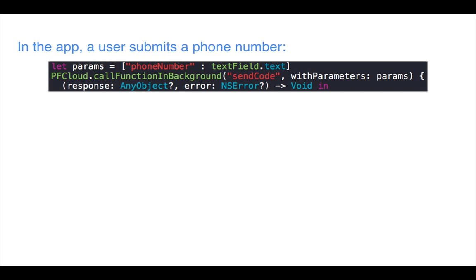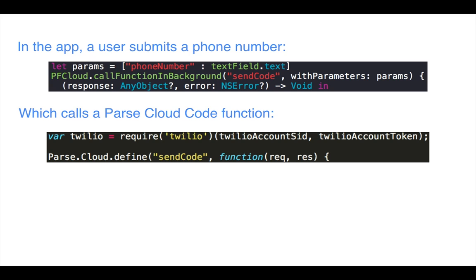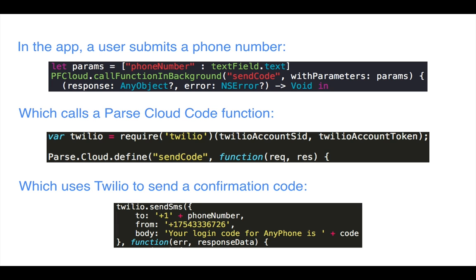So how this works is: once the user submits their phone number in AnyPhone, we take that number out of the text field and we call a Parse Cloud Code function called SendCode, which is defined in our cloud code file that we've deployed to Parse. In this function, we'll query for the user to find out if this phone number has logged in before. If they have, we'll reuse that account; otherwise, we'll create a new user for this phone number. Then we'll use Twilio to actually send out a text message with the verification code.